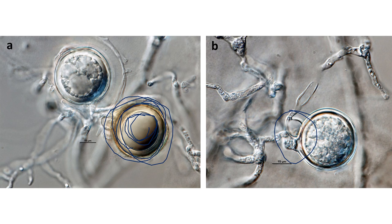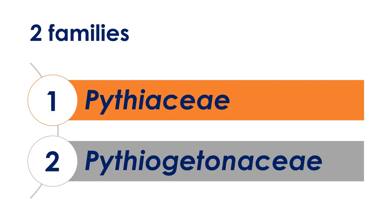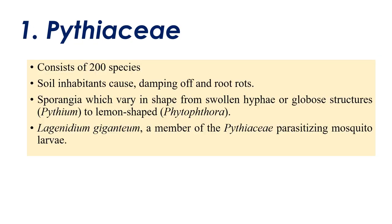In Pythiales there are two main families: Pythiaceae and Pythiogetonaceae. We are going to discuss Pythiaceae only, which contains only one important fungus — Pythium. Pythium consists of around 200 species, most of which are soil inhabitants causing damping off and a couple of root rots. The shape of sporangia in Pythium is generally globose, whereas in Pythiogetonaceae it is lemon-shaped or slightly curved.